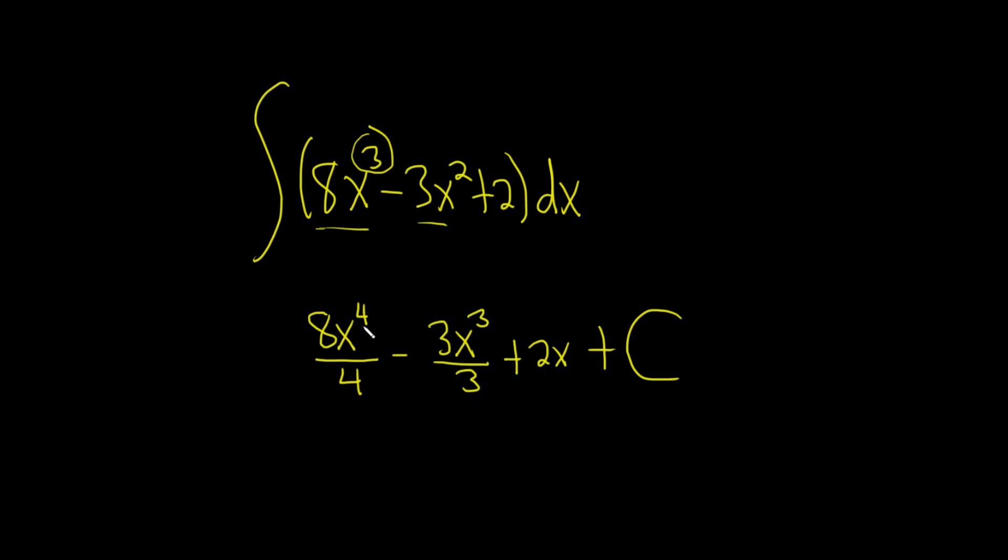So it looks like some stuff can be simplified here. 8 over 4 is 2, so we have 2x to the 4 minus x cubed. We have plus 2x, and then our giant capital C, which is our constant of integration.